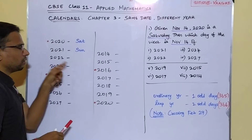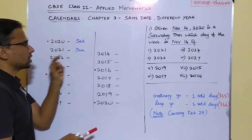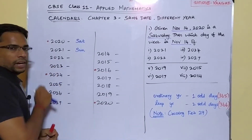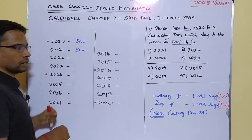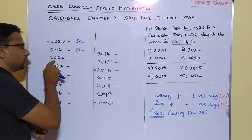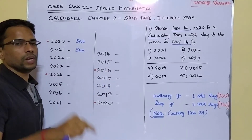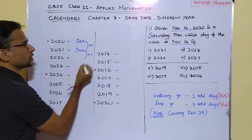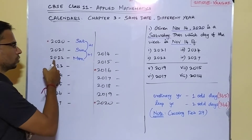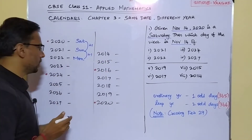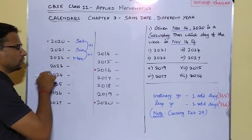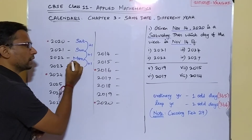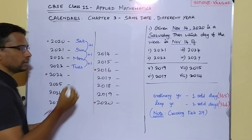From 2021 to 2022, again we cross February of 2022 with only 28 days, so it is plus one. Sunday plus one is Monday — so 2022 November 14 is a Monday. Moving from 2022 to 2023, again an ordinary year with only one odd day. Monday plus one is Tuesday, so 2023 November 14 is a Tuesday.